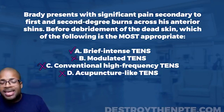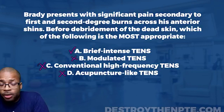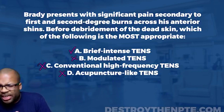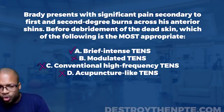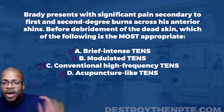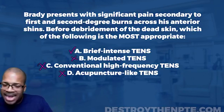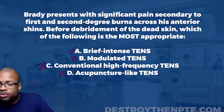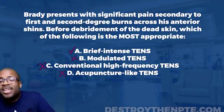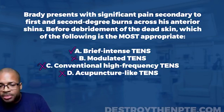What I want you to remember: brief intense TENS is used before or during some type of painful procedure that must be done — whether it's debridement, manual therapy, or whatever will cause the patient pain. It's typically a very short treatment, less than 15 minutes — knock it out and help block any intense pain during the procedure. Big picture: brief intense TENS, answer A, is the correct answer. Congratulations if you got it right — this one is not easy.